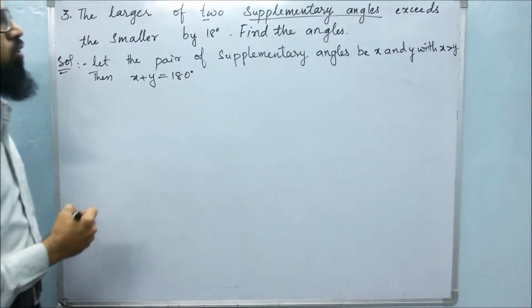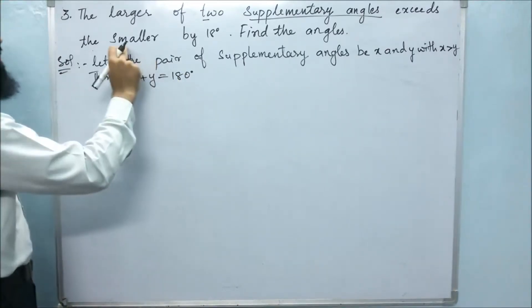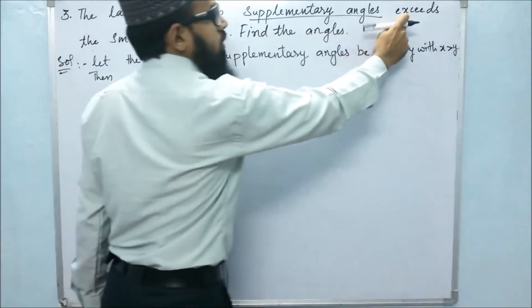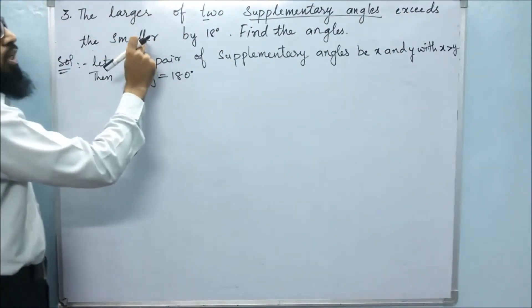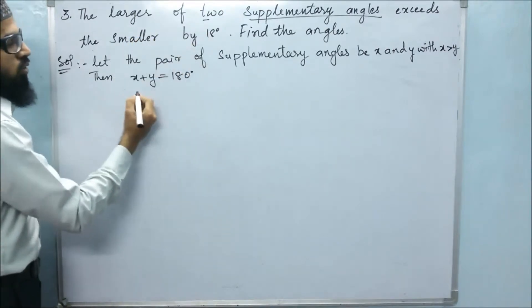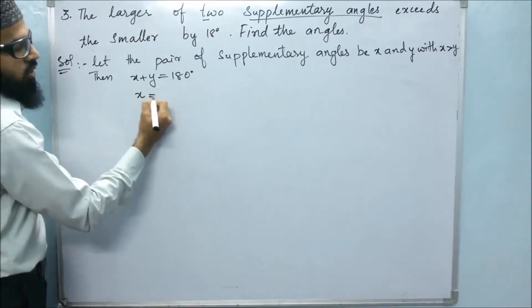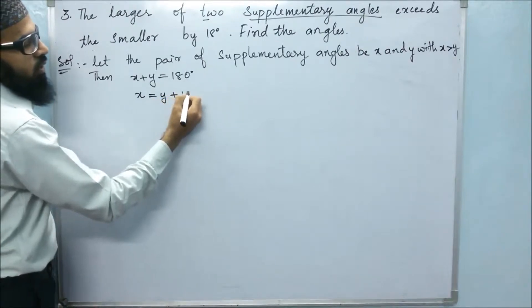Then next, according to the problem, they said that the larger angle is greater than the other by 18. So we can write x equals y plus 18.